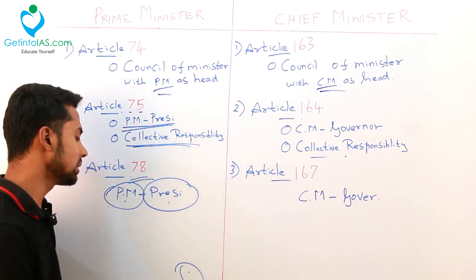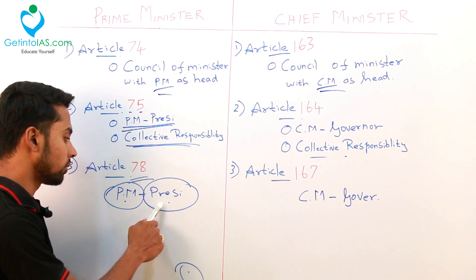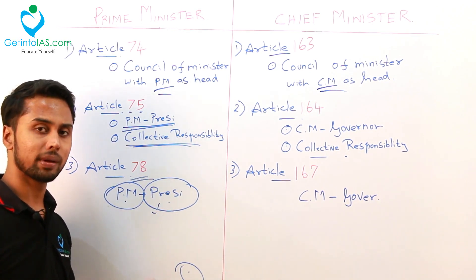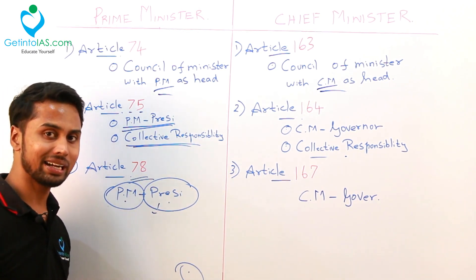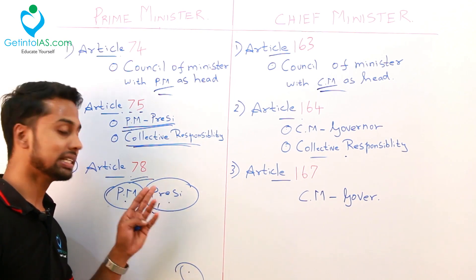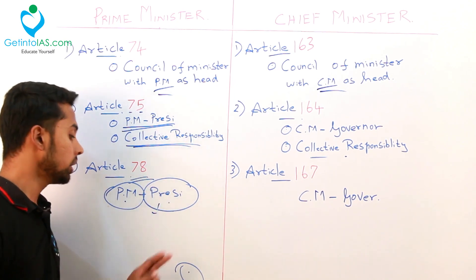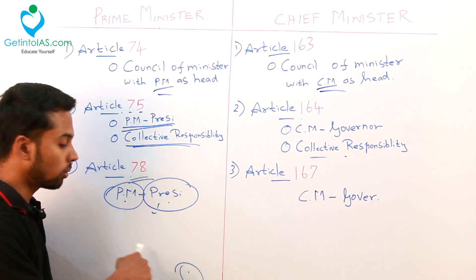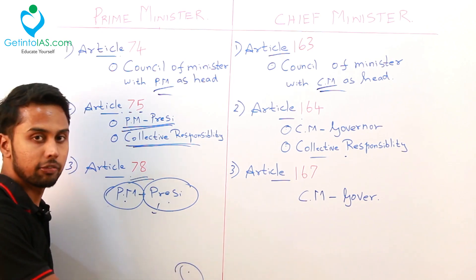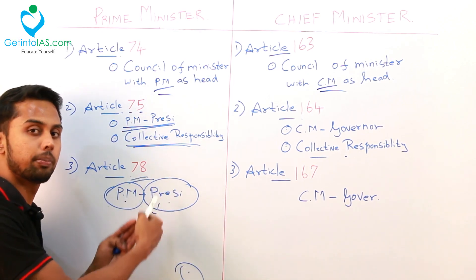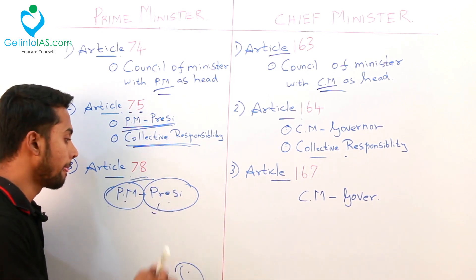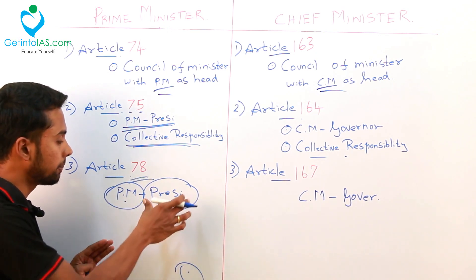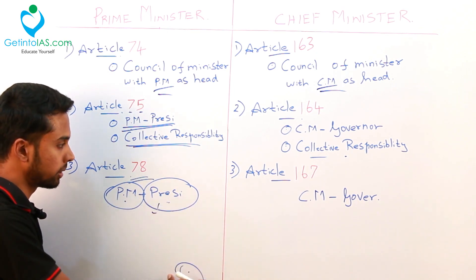On other occasions, if the president needs any clarity about the decision taken, he will ask the prime minister about what happened. Then the prime minister will submit the reports to the president. That is how he is acting as the bridge between the president and the council of ministers.